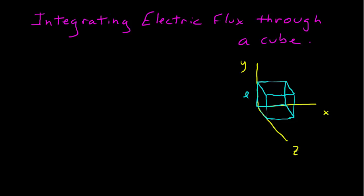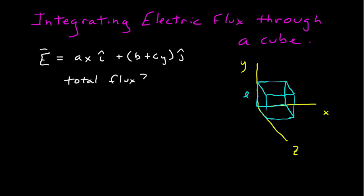So I have a cube here. It has one corner at the origin, with sides of length L along the positive x, y, and z axes. The electric field for which we are going to calculate the electric flux is given by ax î, where a is a constant, plus (b + cy) ĵ, where b and c are constants. We want to find the total electric flux integrated over this cube — this surface integral.